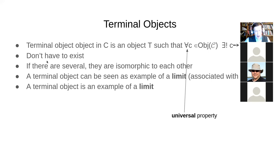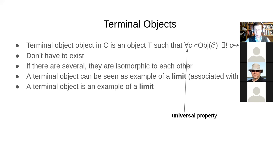Nice categories often include a terminal object, but there are many categories where it doesn't exist, or where there might be several such terminal objects — in which case they're isomorphic to one another. That's actually a fairly easy thing to prove, and it's a nice example of the properties of a category.